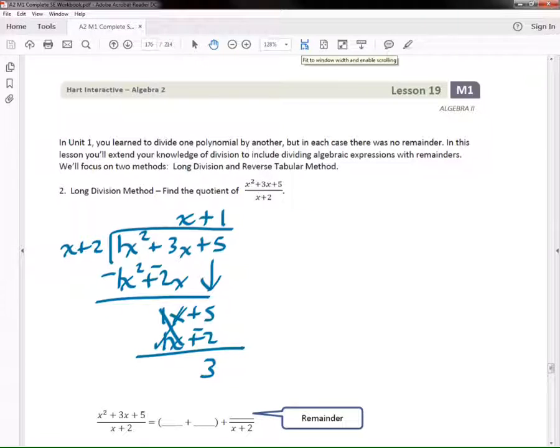So my remainder is 3. But do I bring anything else down? Nah. You say plus, and then you say 3 over x plus 2. That is it. That's your answer. So I'm going to put the 3 right here, and the x and the 1.